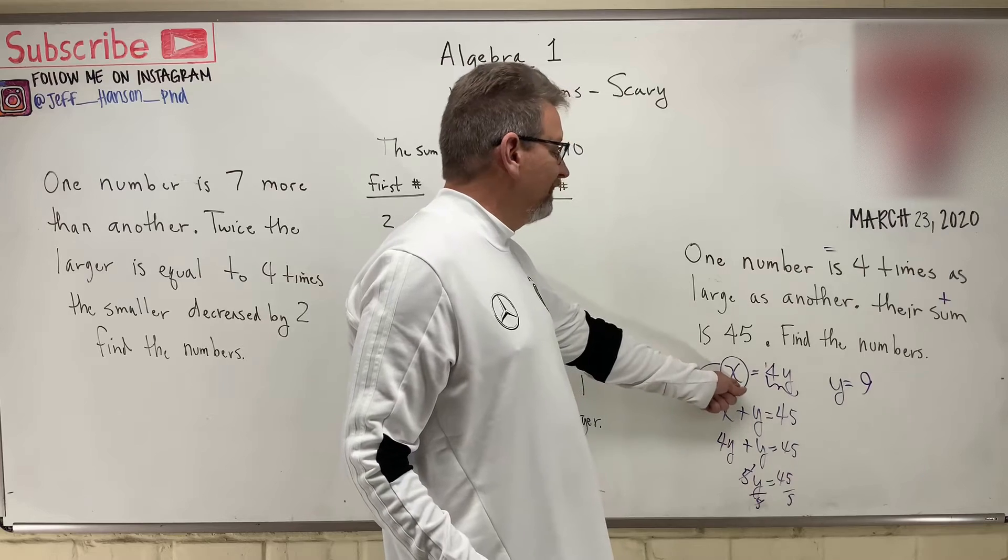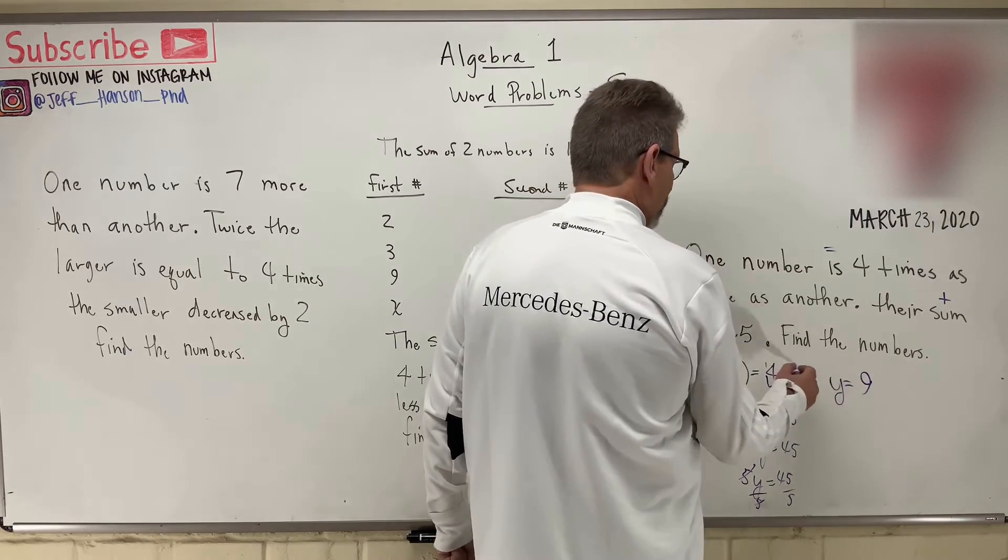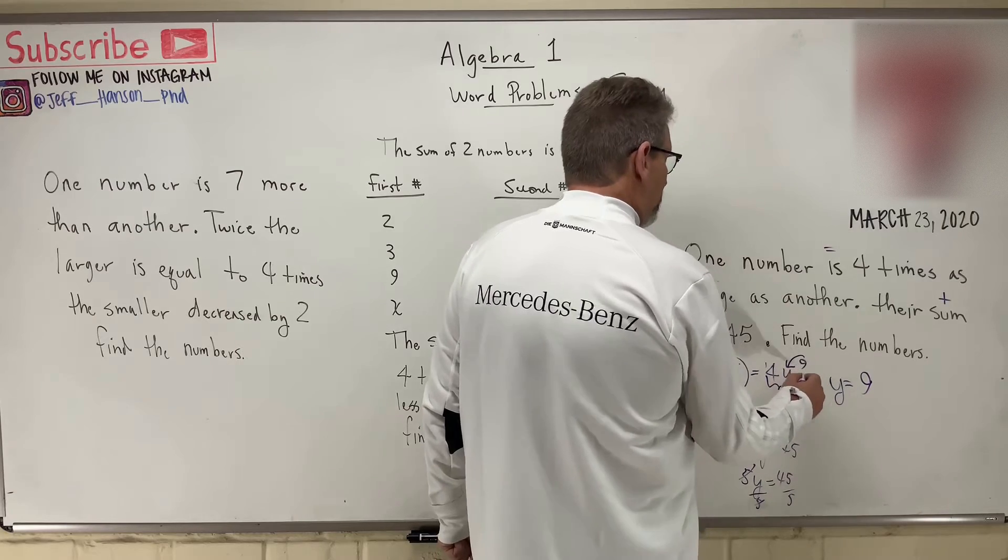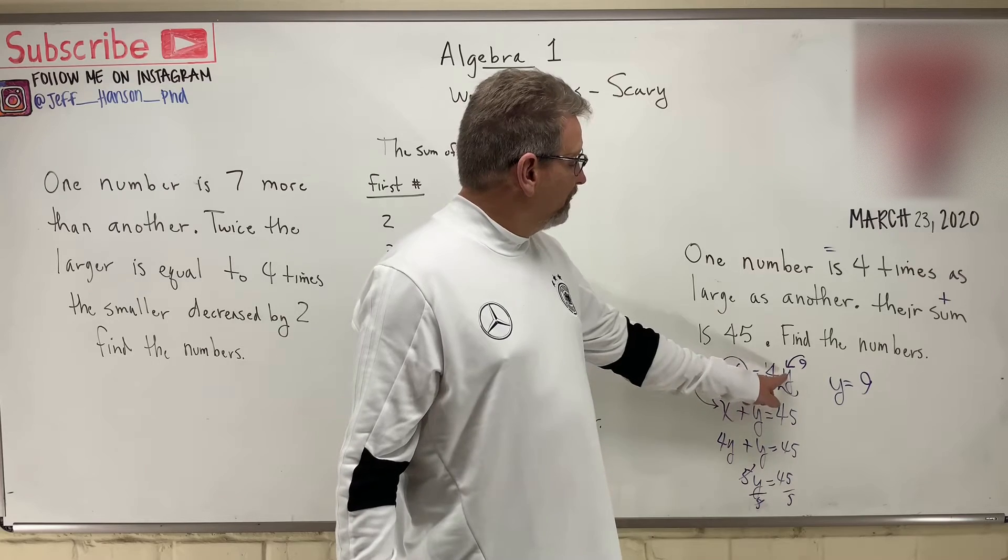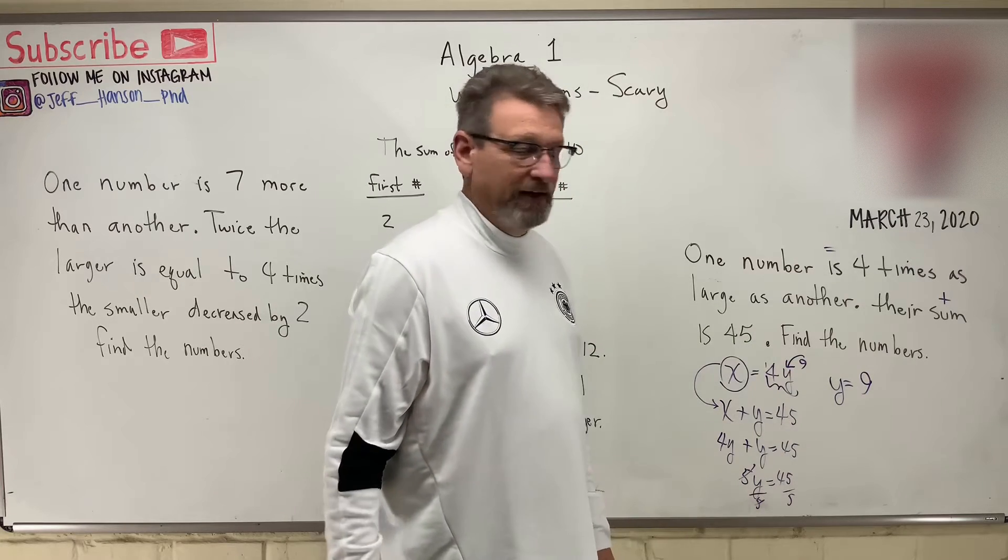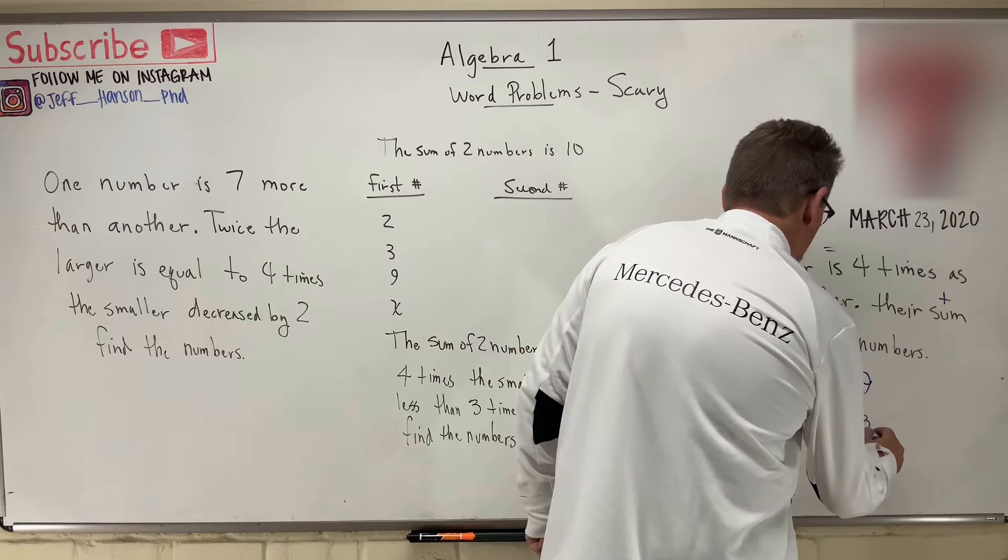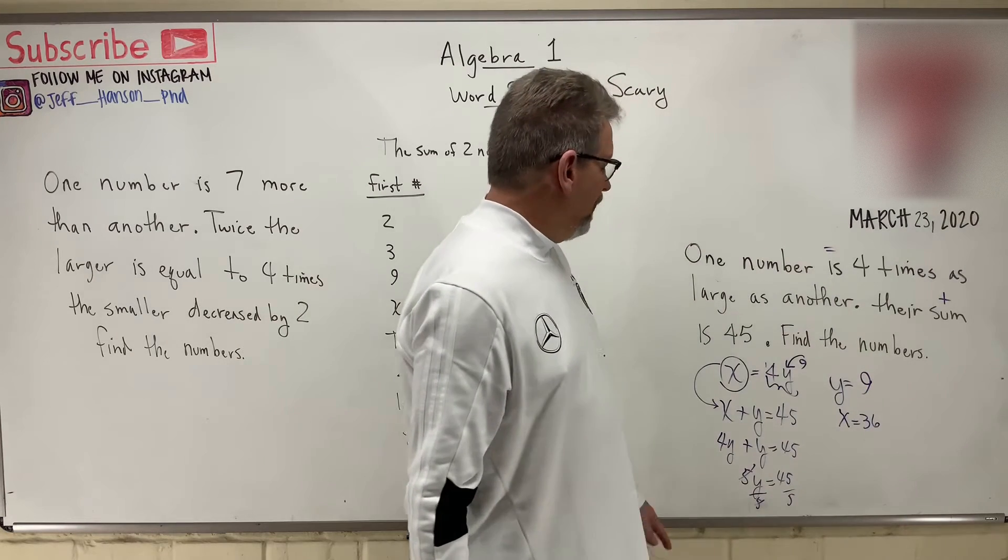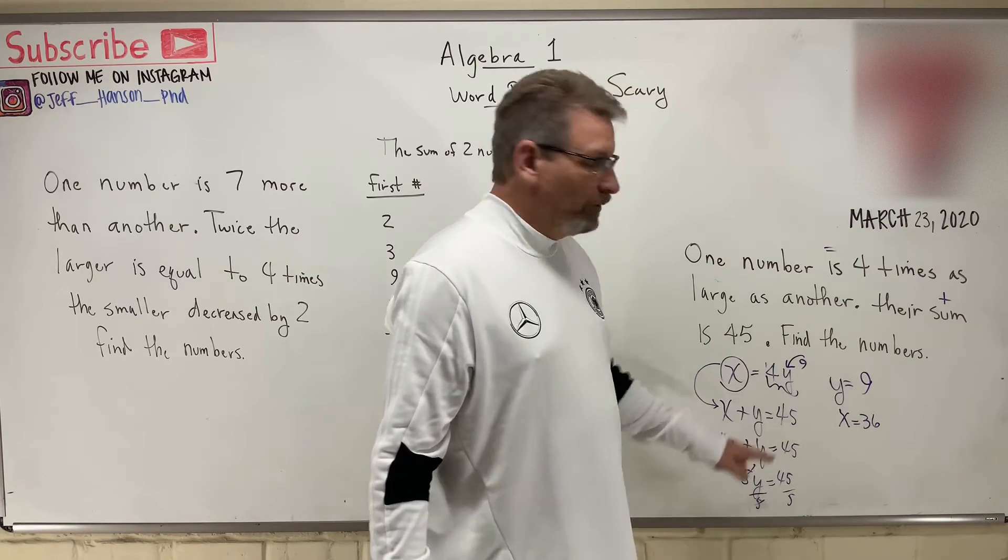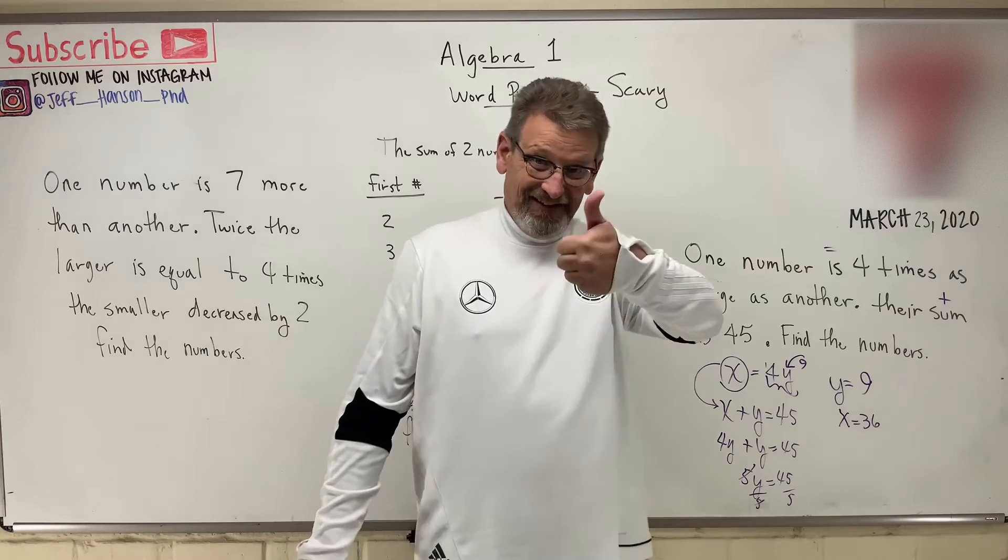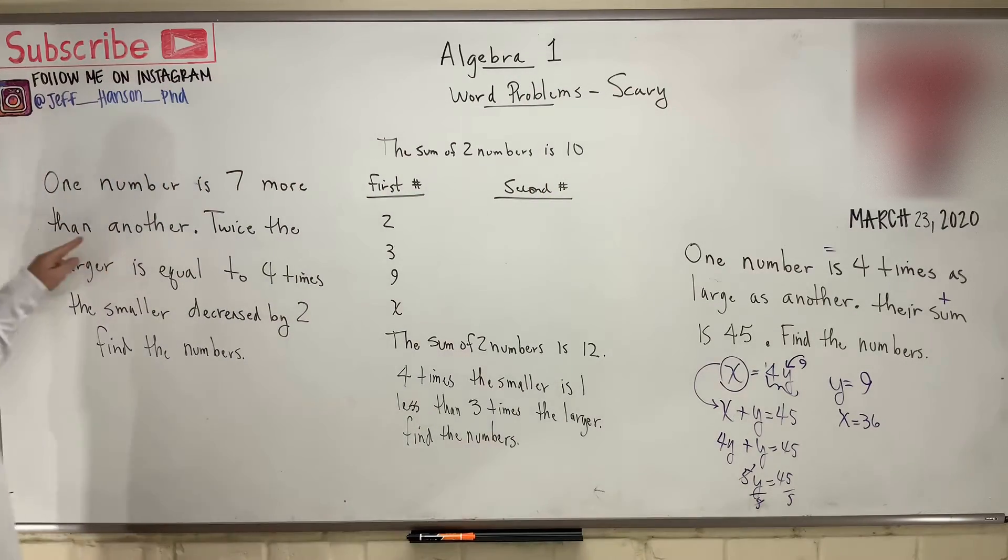Well then what is X equal to? We just solved for that guy. If we put a nine right in there for Y, what do we get? X is equal to four times nine. What's four times nine? 36. X equals 36. How about this? Is nine plus 36 equal to 45? It is. We did it. There you go. Let's try again.